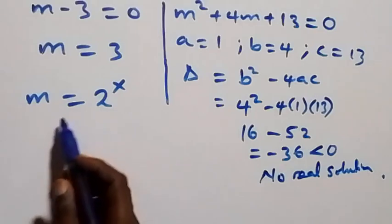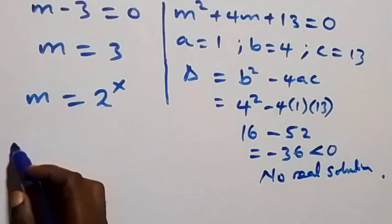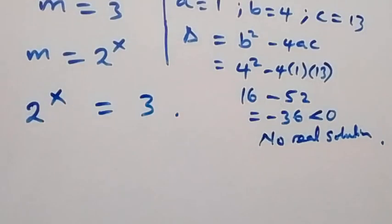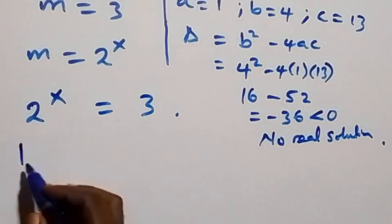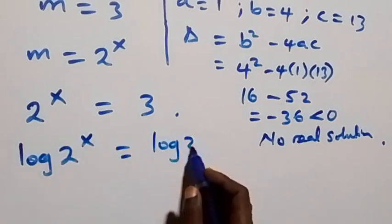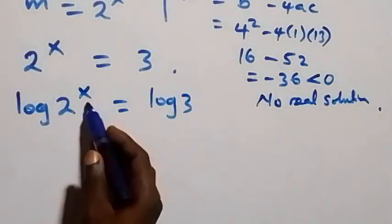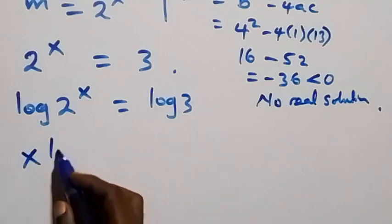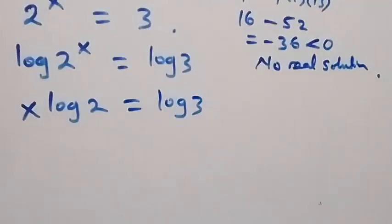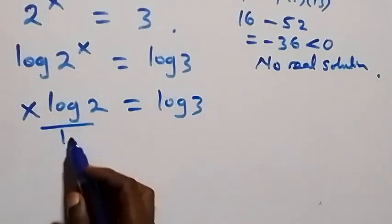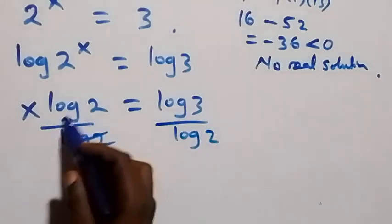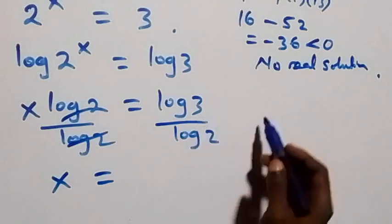Working from m equals 2 raised to power x, we have 2 raised to power x equals 3. Taking the log of both sides, log of 2 raised to power x equals log 3. Applying the power rule of logarithms, x comes down: x times log 2 equals log 3. Dividing both sides by log 2, the log 2 cancels on the left.